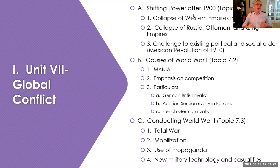The Ottoman empire was trying to keep itself together through the Young Turk movement, which was trying to modernize the Ottoman empire while maintaining Turkish domination over other ethnic groups that were part of the empire. World War One puts the Ottoman empire on the losing side, and pretty soon the empire breaks up along those ethnic divisions. The Republic of Turkey is going to be the continuity of the former Ottoman empire.